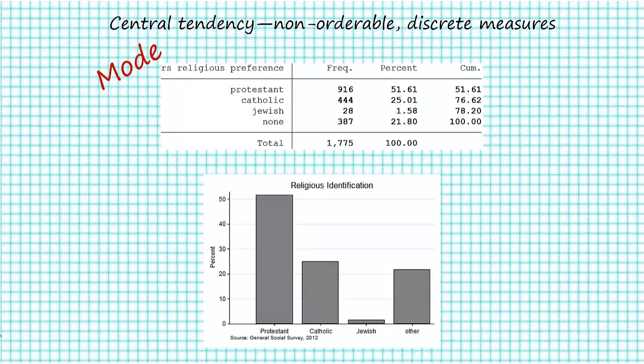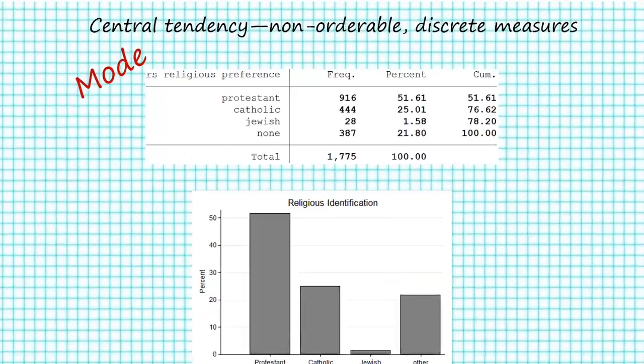In this example, we're going to learn how to calculate the mode of a distribution for a variable that is non-orderable and discrete. The variable selected here is taken from the 2012 General Social Survey and it asks people their religious preference.